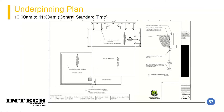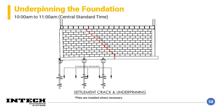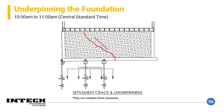Once we determine what the differential settlement is, we can determine where to put the piles. This is an example of a plan we've done — we're basically placing piles where the differential settlement is. Where the foundation hasn't settled, we're not going to put piles. This example shows pile placement for a masonry wall and a concrete foundation wall where settlement has been determined.